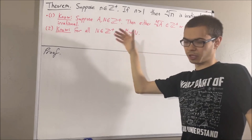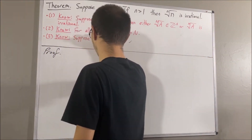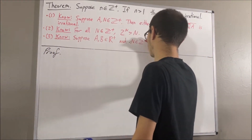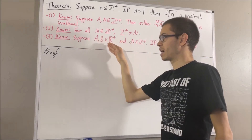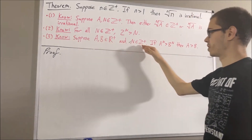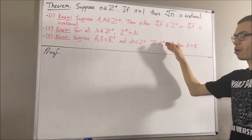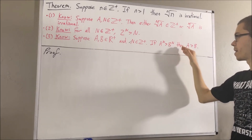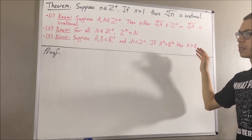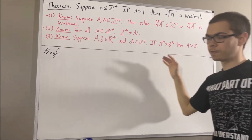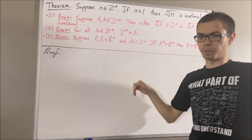Now here's the third preliminary result: suppose a and b are positive real numbers and n is a positive integer. If a to the power of n is greater than b to the power of n, then a is greater than b. I'll leave proofs of these three results in the description below.